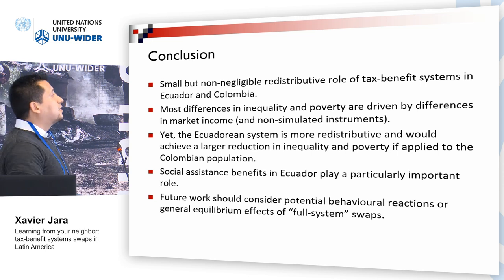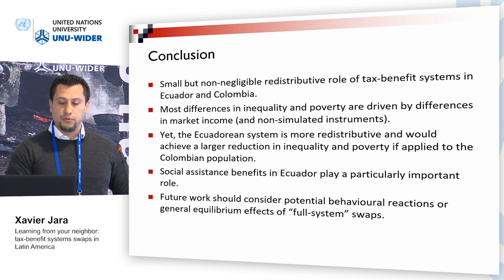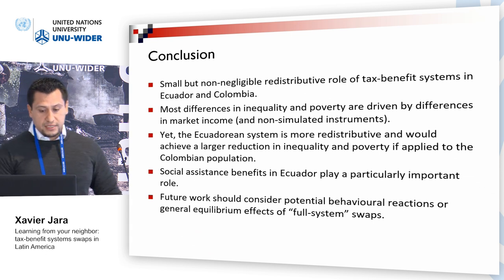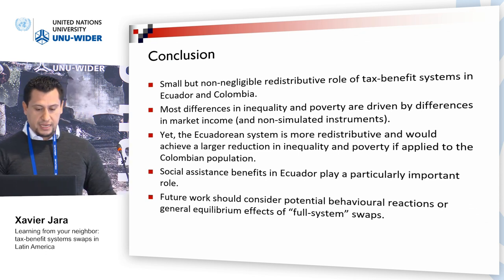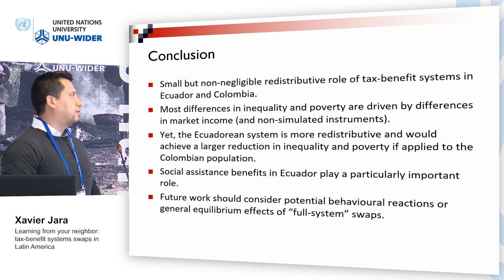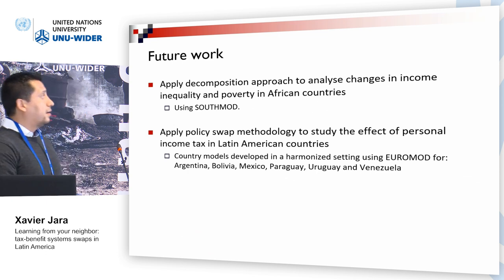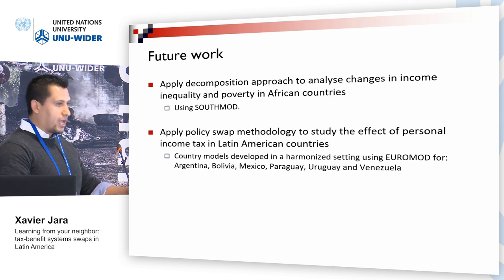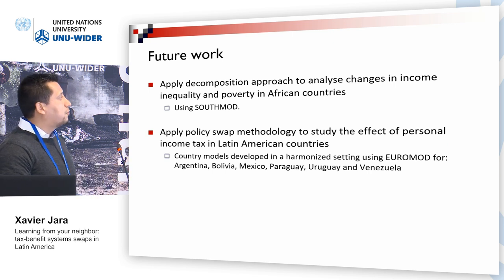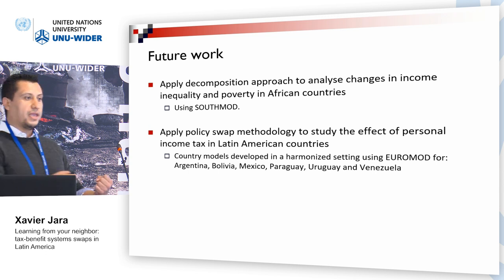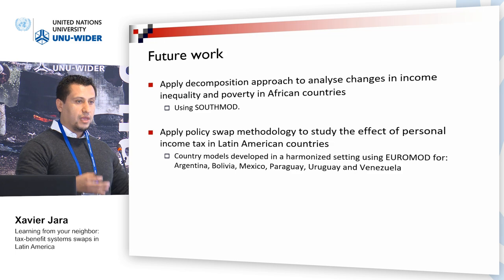In conclusion, there is a small but non-negligible redistributive role of tax benefit systems in Ecuador and Colombia. Most differences are accounted for by differences in market income and other components, yet the Ecuadorian system is more redistributive and would achieve a larger reduction in inequality and poverty if applied to the Colombian population — due to the more generous social assistance benefit in Ecuador, in particular the human development transfer cash transfer for the elderly. In terms of future work, we want to apply this methodology to African countries, taking better account of labor market informality, and also to apply the policy swap methodology to Latin American countries to examine the most redistributive personal income tax.